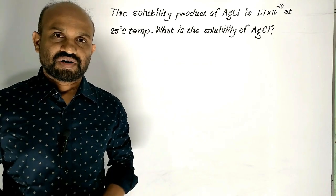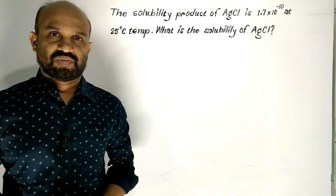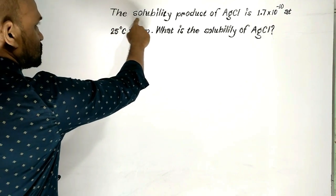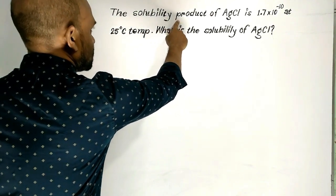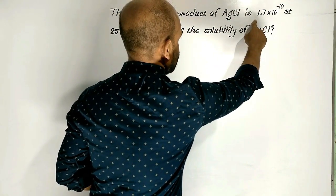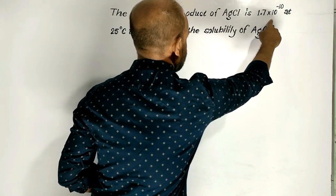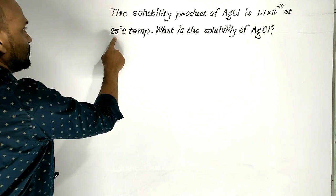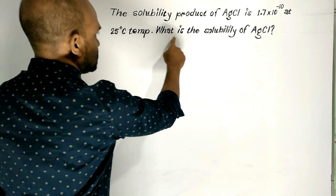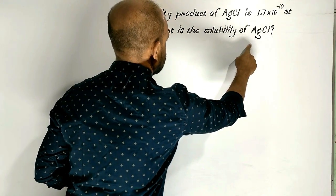We will solve a mathematical problem related to solubility. The solubility product of silver chloride is 1.7 times 10 to the power minus 10 at 25 degrees Celsius temperature. What is the solubility of silver chloride?